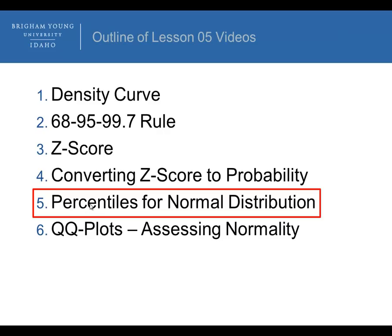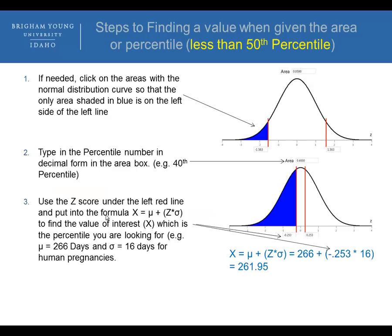Now, item number five, percentiles for a normal distribution. We would use the applet, and I have two slides here in terms of how to go about using the applet to get your percentile. First of all, a percentile: my height is in the 70th percentile. That means that I am taller, in terms of males, if I'm in the 70th percentile, my height means I'm taller than 70% of all males. That means I'm shorter than 30% of all males.